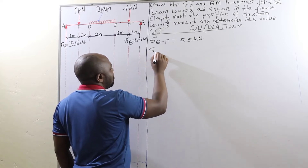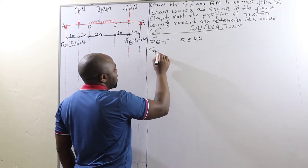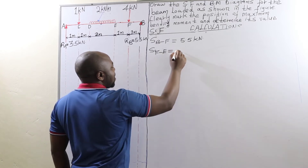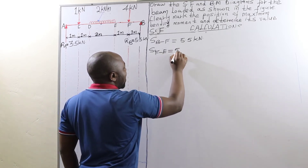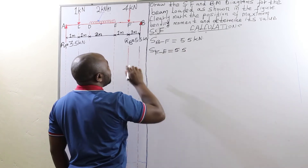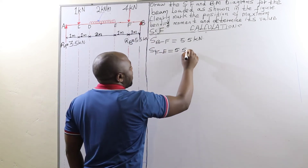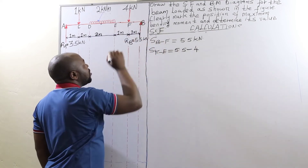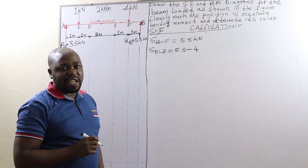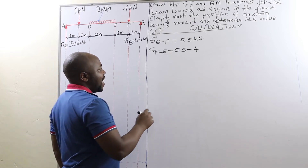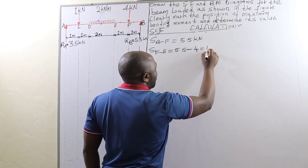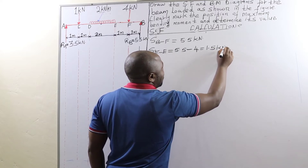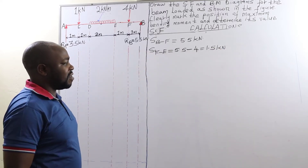From there we go to shear force between point F and point E, which is going to be 5.5 kilonewtons minus 4 kilonewtons — the point load acting at point F — and this is going to give us 1.5 kilonewtons.